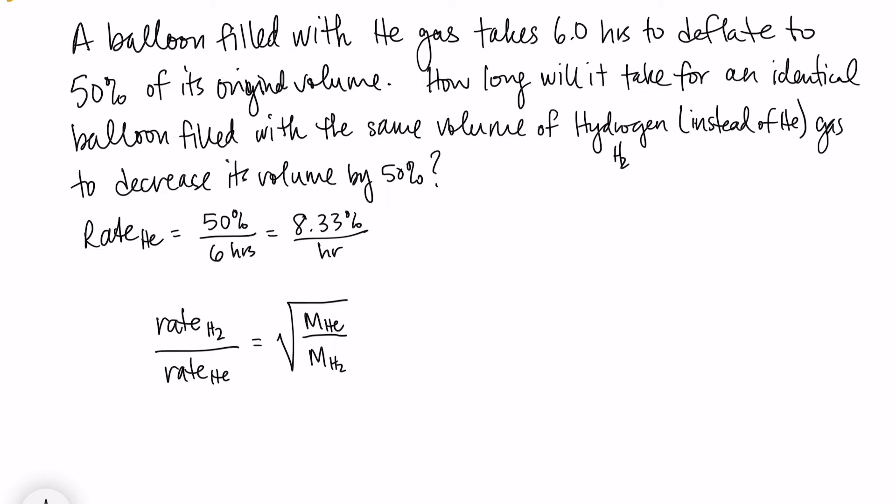And then I can solve this equation. I'm going to first just solve for the rate of hydrogen. That would be our square root molar mass of He over molar mass of H2 times the rate of He. So let's plug these guys in.